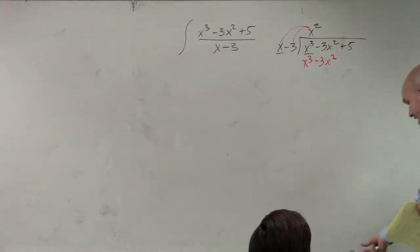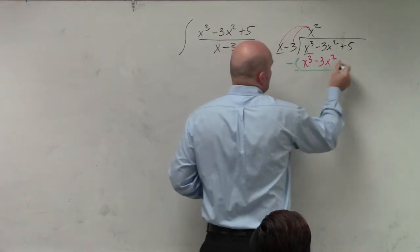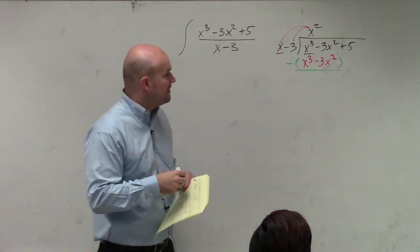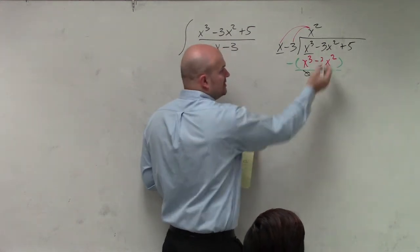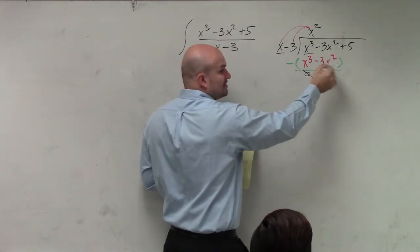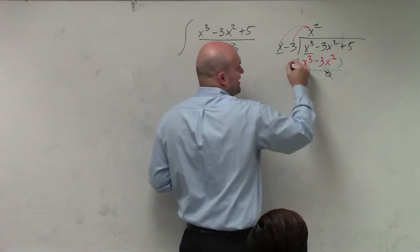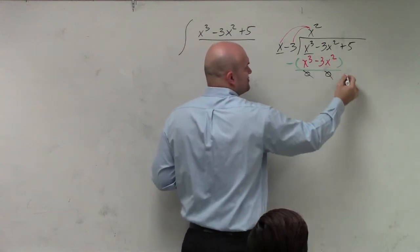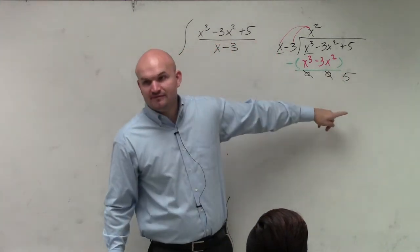Then you subtract the rows. Just make sure you're subtracting both of them. So therefore, we have x cubed minus x cubed, which is just 0. Negative 3x cubed minus negative 3x cubed, that becomes positive, so that becomes 0. And then you could say 5 minus 0 is going to be 5. Now, does x minus 3 divide into 5? Nope.